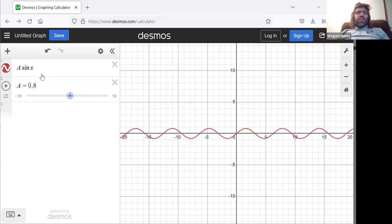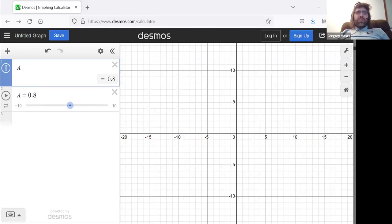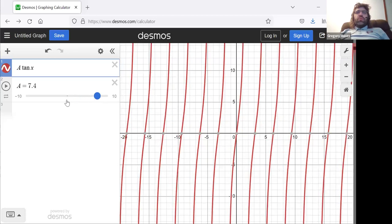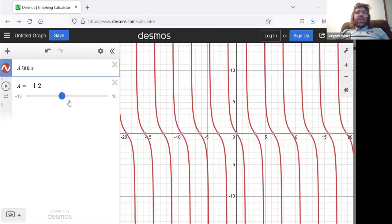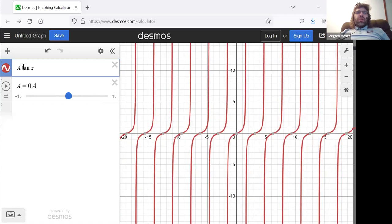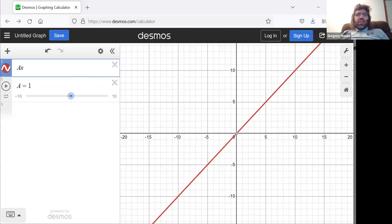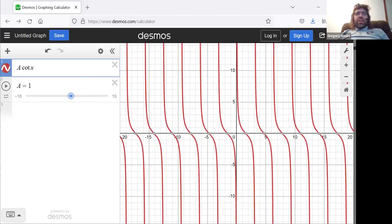And it's exactly what happens to the tangent. It stretches it up or smooshes it down. So there's no reward for guessing what A will do to the cotangent.